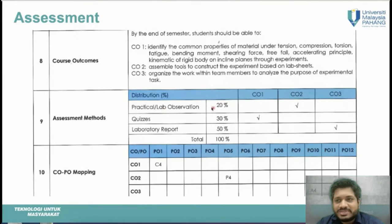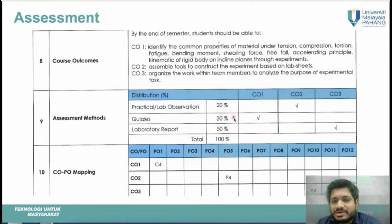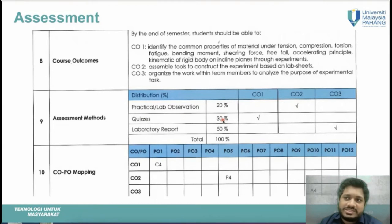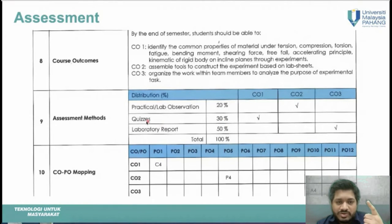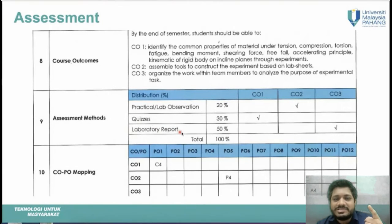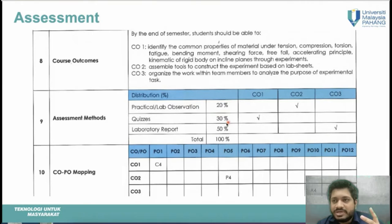The assessment distribution is as follows: practical lab observation is 20%, the quiz — which is the short report — is 30%, and the long report, called the laboratory report, is 50%. These are the assessment distributions for the current semester.